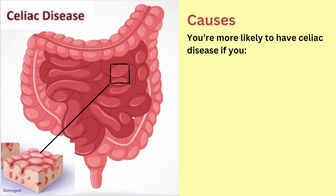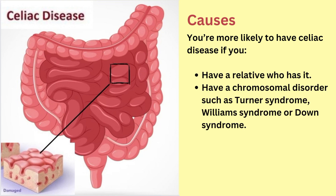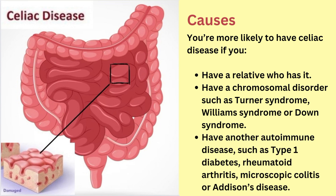You are more likely to have celiac disease if you have a relative who has it, have a chromosomal disorder such as Turner syndrome, Williams syndrome or Down syndrome, or have another autoimmune disease such as type 1 diabetes, rheumatoid arthritis, microscopic colitis or Addison's disease.